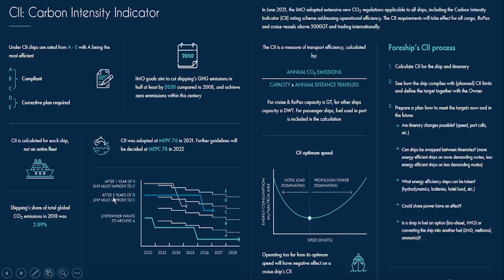If your ship falls in category E, you must improve to C by submitting a corrective action plan. If it falls in category D, you get a three-year period and must improve to at least C. If you fall in category A or B, you will receive an incentive. The CII formula is: annual CO2 emission divided by capacity multiplied by annual distance travelled. For cruise and ro-pax ships, capacity is GT; for other ships, it is deadweight tonnage.